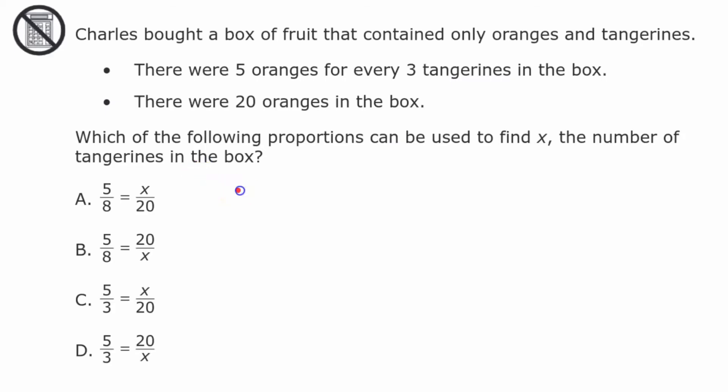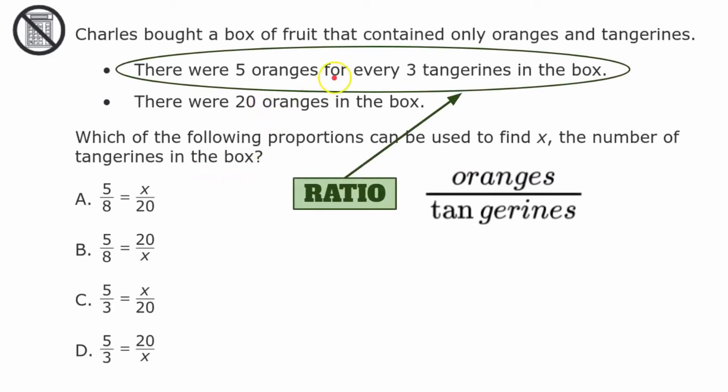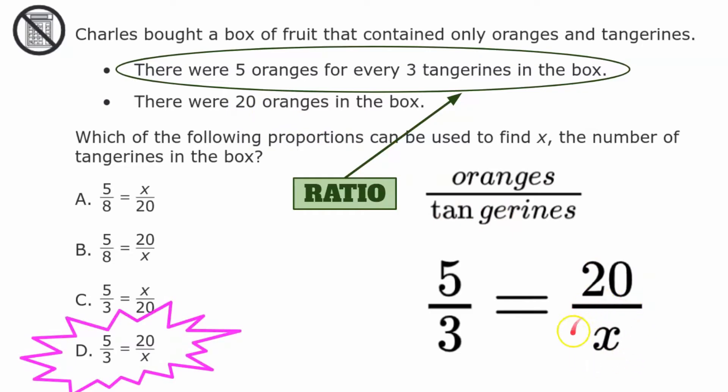Welcome back. The first thing I want to note is this is a ratio. I've been given the number of oranges for every number of tangerines that are in the box. So I write that ratio as five over three. To make a proportion, I note it has to be an equivalent ratio. So I want to know oranges to tangerines. The second item they gave us was that there are 20 oranges in the box, but we don't know how many tangerines are in the box, so that's our x. So our proportion that we came up with was d. Five oranges to three tangerines will be equivalent to 20 oranges out of x tangerines.